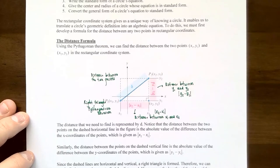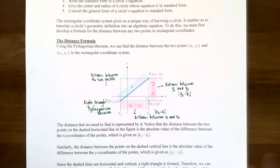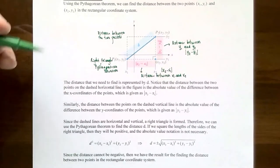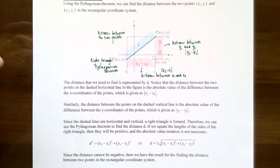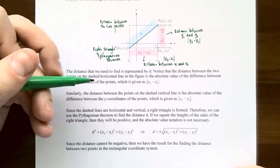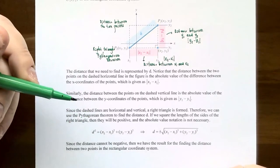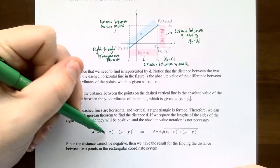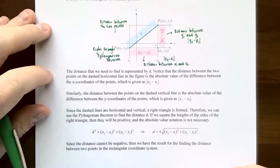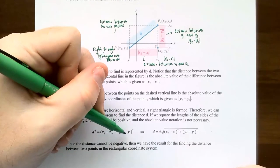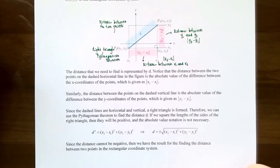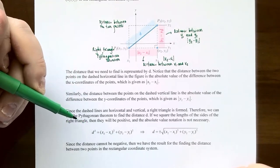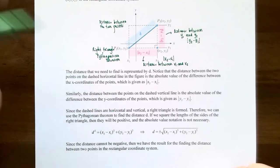Now why is that important? We want to find the three lengths of the triangle related by the Pythagorean Theorem, specifically the length of the hypotenuse. The Pythagorean Theorem says the length of the hypotenuse squared equals the sum of the other two sides squared. So D² equals (x₂ minus x₁)² plus (y₂ minus y₁)². Notice that the absolute value is not needed here — when you square a negative number you get a positive answer, and same for a positive number, so the absolute values can be dropped.